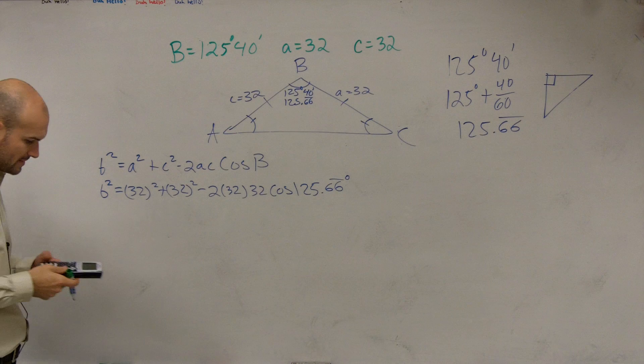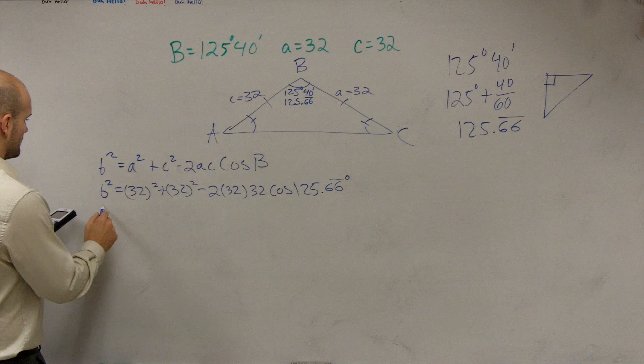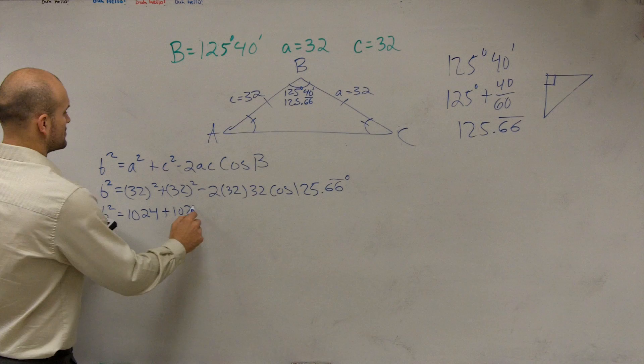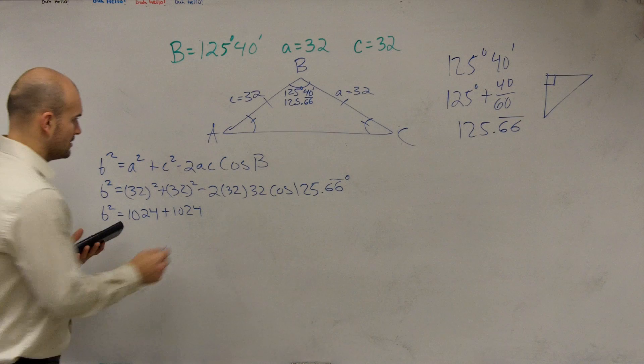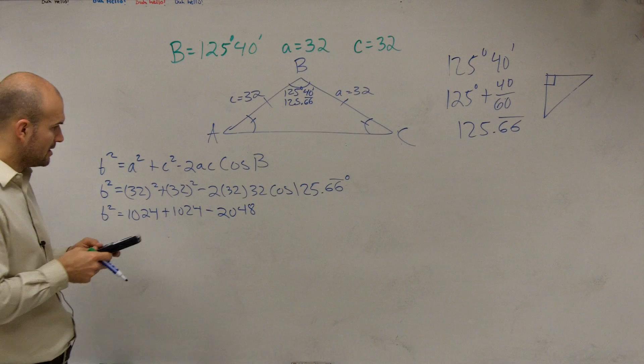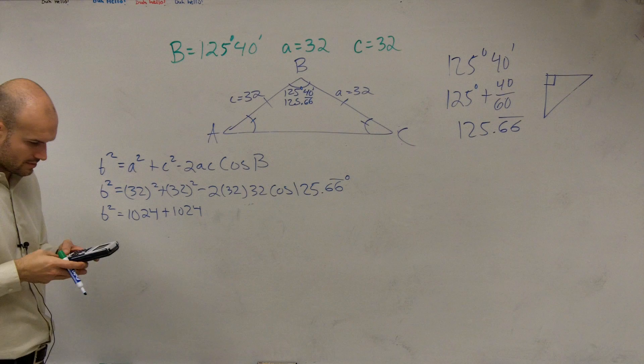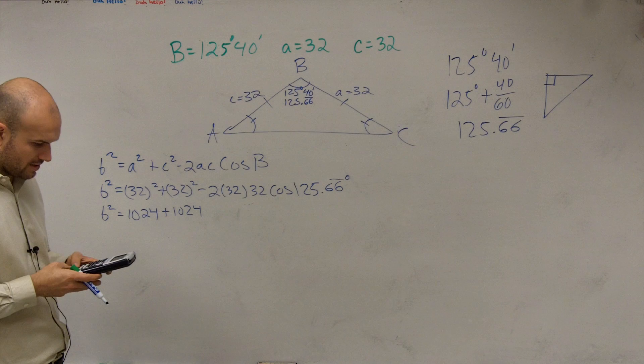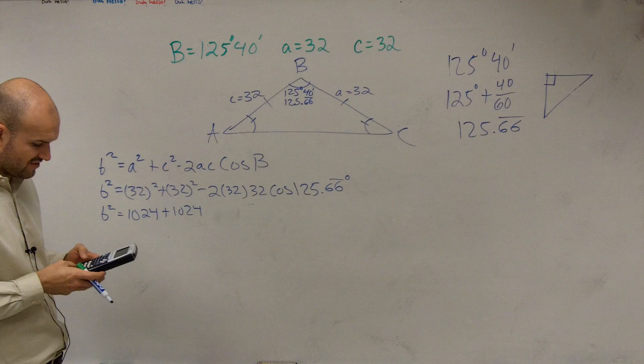Okay. I don't know what 32 squared is going to be. So 32 times 32 is 1024. So we have b squared equals 1024 plus 1024. And then 32 times 32 times 2 is going to be negative 2048. And let's just multiply that actually out. 2, 0, 4, 2, 0, 4, 8 times the cosine of 125 points.